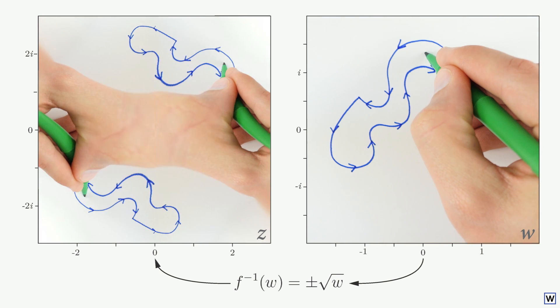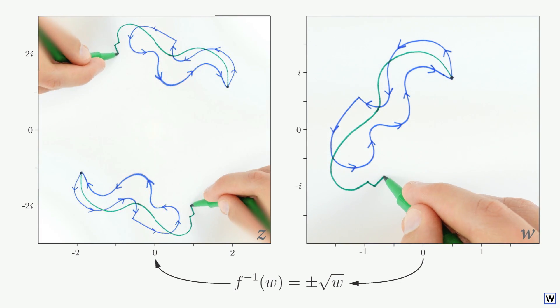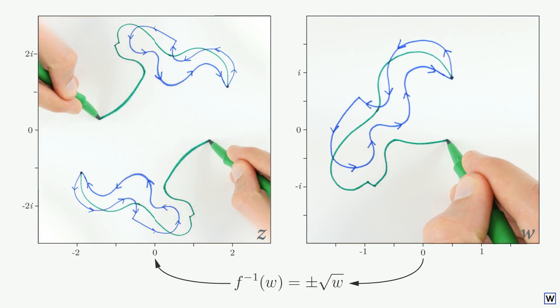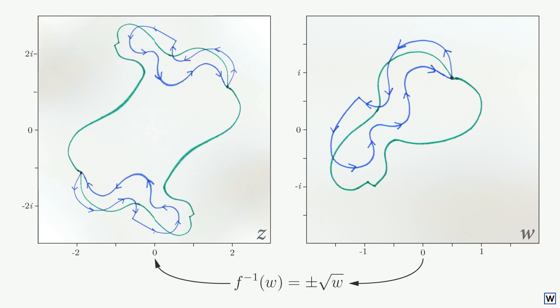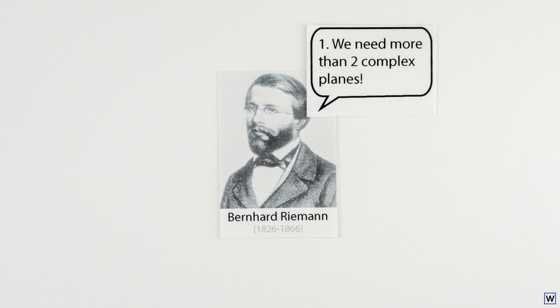Last time, we left off wondering why some paths on our w-plane led us to completely new values on our z-plane, while others didn't. Gauss' student, Bernhard Riemann, made some powerful insights into problems like this in the mid-19th century. The first part of Riemann's contribution is the idea that, for problems like this, we need more than two complex planes to visualize our function.